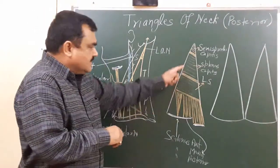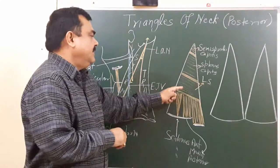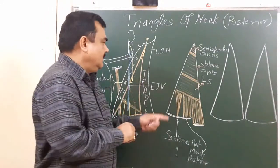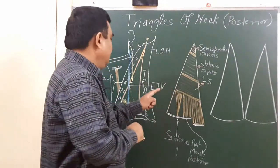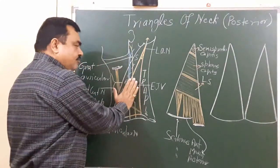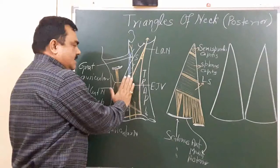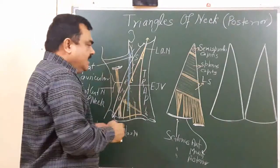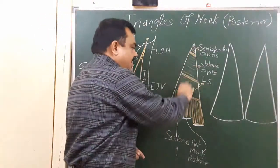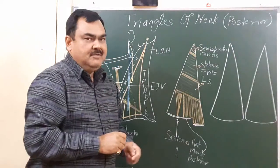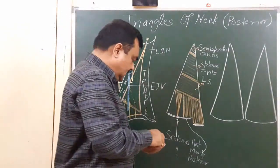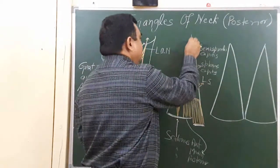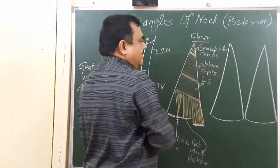These muscles are covered with the prevertebral fascia, that is the fascia of the neck. Just as the roof is internally lined by the investing layer of the deep cervical fascia, the floor is covered by the prevertebral fascia. So these structures form the floor of the posterior triangle.